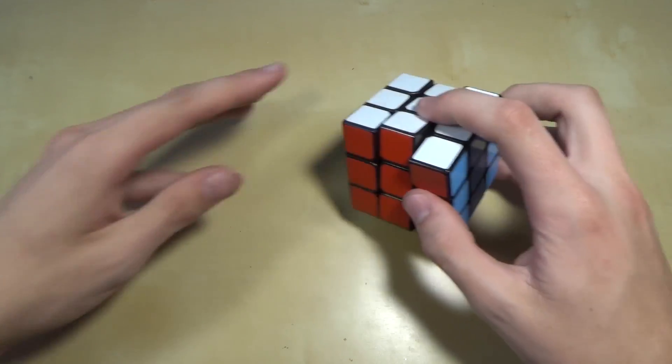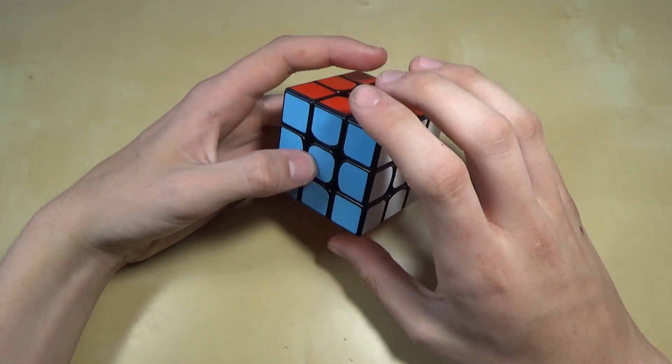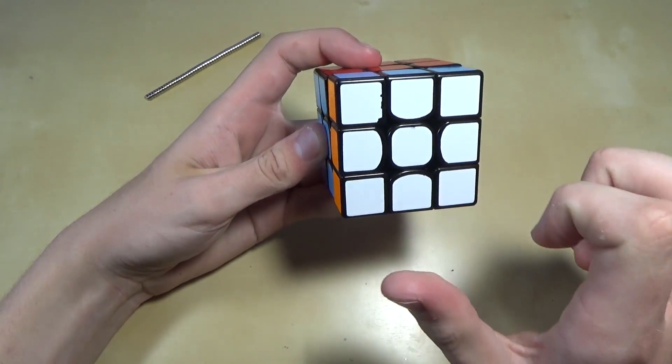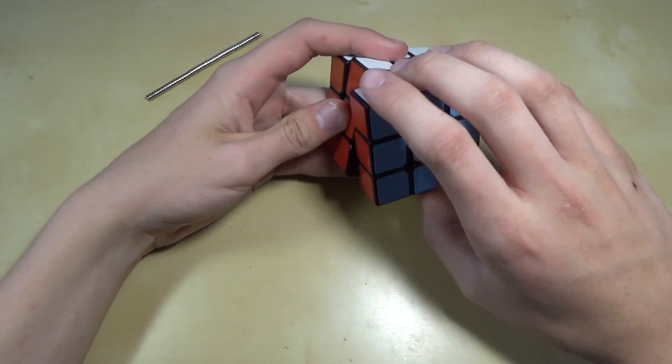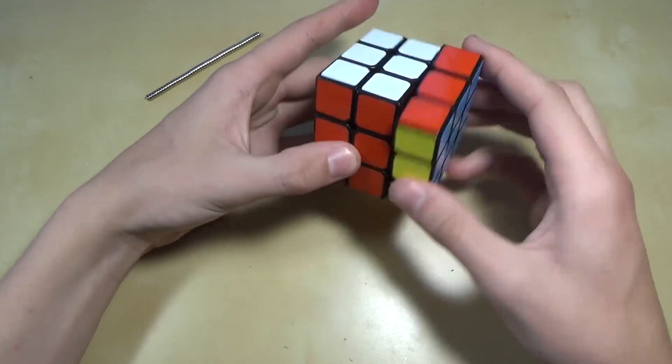Today I'm going to be showing you how to take a cube like the Valkyr that has a three-part corner design and a two-part edge design, which I'll explain in a second, and put magnets in it to make it magnetized. This will work with a lot of popular speedcubes like the Valkyr. I'm actually going to be doing it on a Zanchi just kind of for fun, but this also has the same kind of three-part corner design as the Valk.